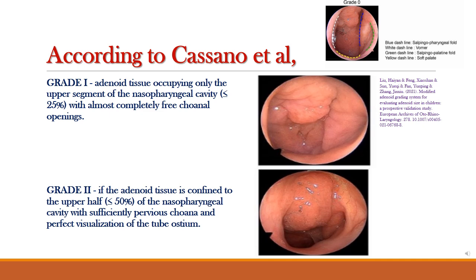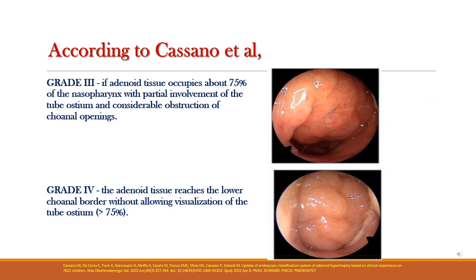As per the Cassano et al. grading system: in grade one, adenoid tissue occupies the upper segment of the nasopharyngeal cavity, approximately 25% or less. In grade two, adenoid tissue is confined to the upper half — less than or equal to 50% of the nasopharyngeal cavity — with sufficiently patent choana and perfect visualization of the tube ostium. In grade three, adenoid hypertrophy occupies about 75% of the nasopharynx with partial involvement of the tube ostium.